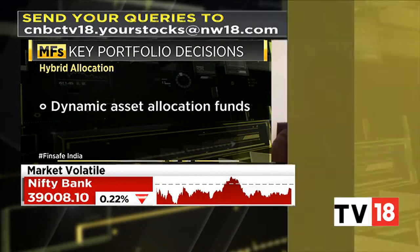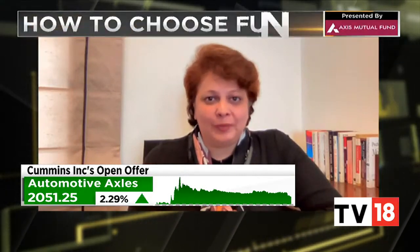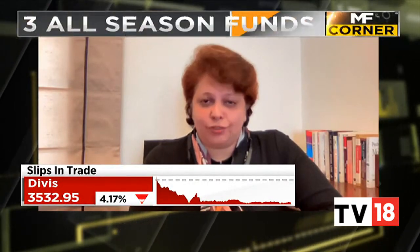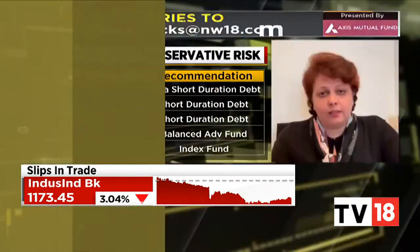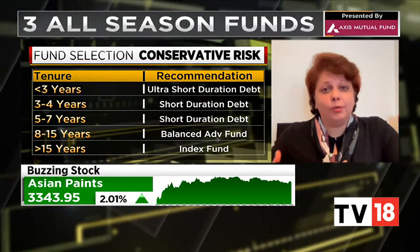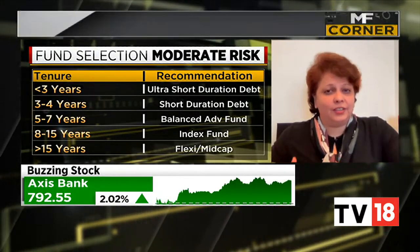But Mrin, can you also classify these according to the duration or tenure of the goal? It's very important because if your holding period is only two years, you obviously cannot look at an equity fund. For periods of less than three years, for all levels of investors, it is the ultra-short-duration debt fund. For periods of three to five years, you can look at short-duration debt funds. When looking at five to seven years, a conservative investor can look at a short-duration debt fund, a moderate investor could look at a balanced advantage fund, and an aggressive investor can actually look at a balanced fund.